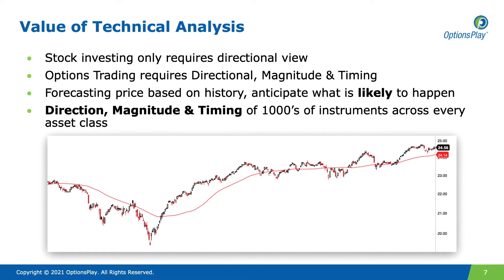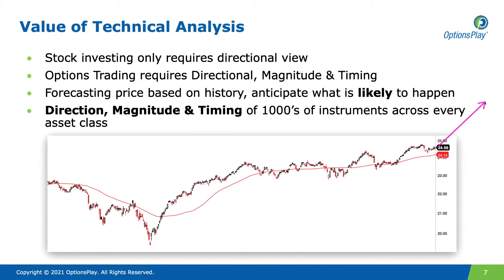Technical analysis is very critical in my work. As a stock investor, the only thing you really need to get right is the directional view — whether you believe a stock is going to go higher or lower. You can actually get the magnitude wrong; if you think a stock is going to go up by $10 but it only goes up by $2, you'll make less money but you won't lose any. Similarly, if it takes three months instead of one month to reach your target price, you still make the same amount of profit.